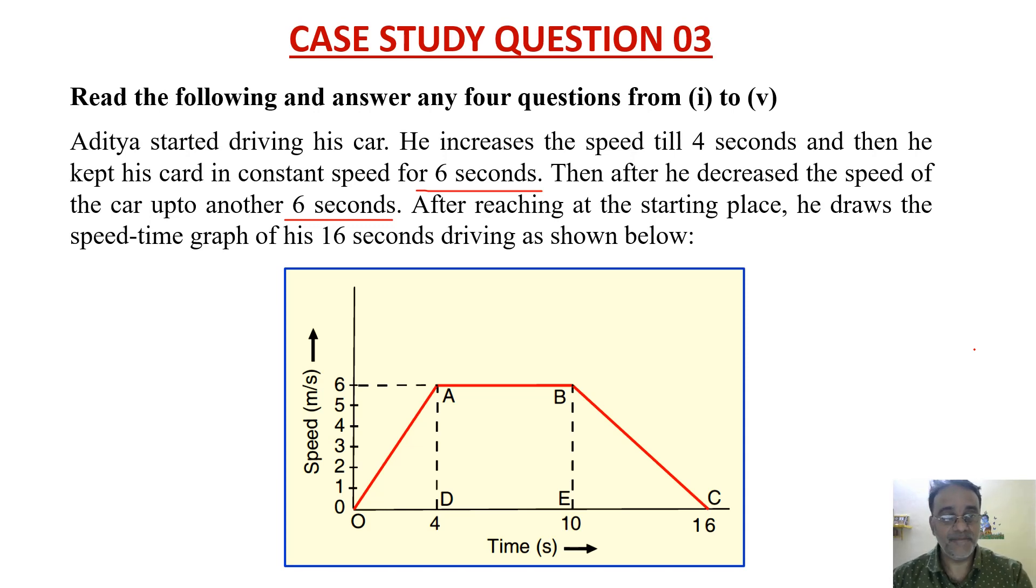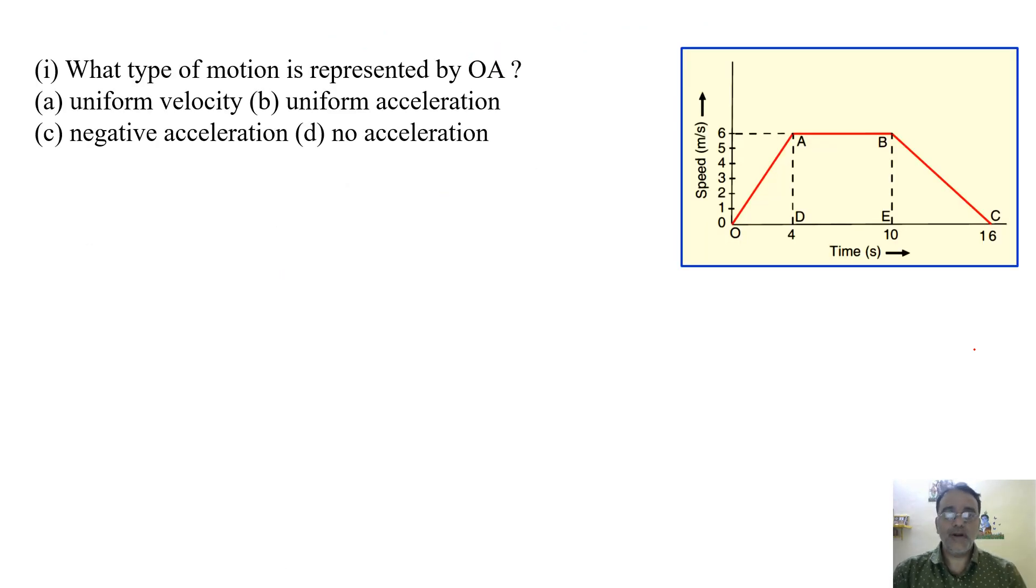So now based on this graph, some questions have been framed. So let us start the question. What type of motion is represented by OA? Uniform velocity, uniform acceleration, negative acceleration, no acceleration.